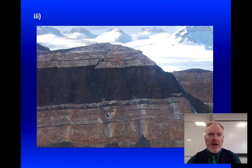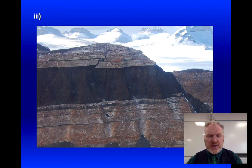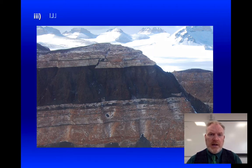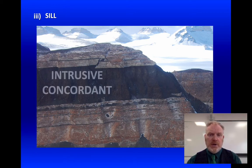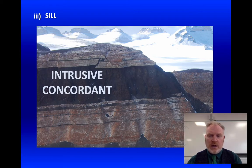Here we have another dark igneous rock with some interesting things going on, but the majority of this dark igneous rock is a sill. The reason it's a sill — just like the previous example — it's intrusive, injected into cracks in the country rock, but it follows the layers. It's concordant.